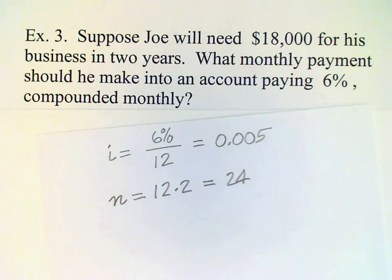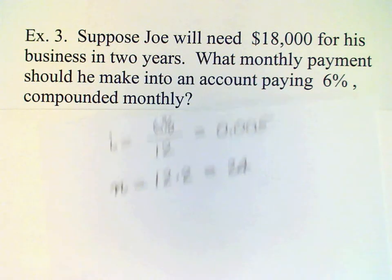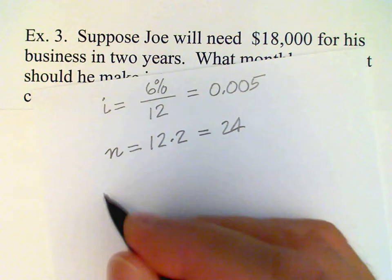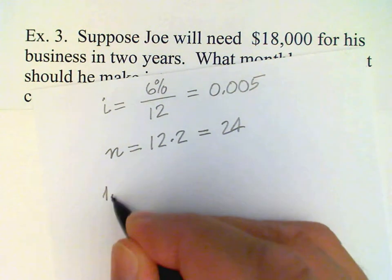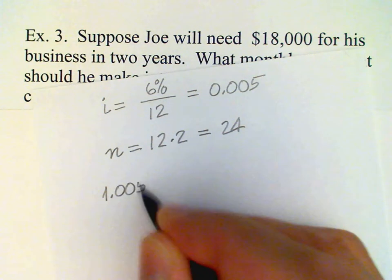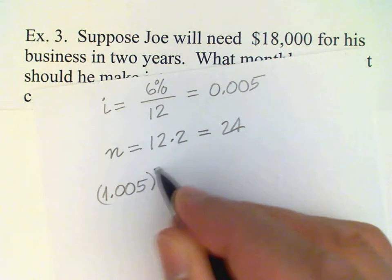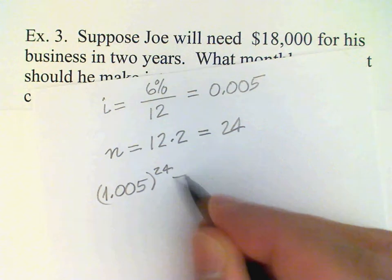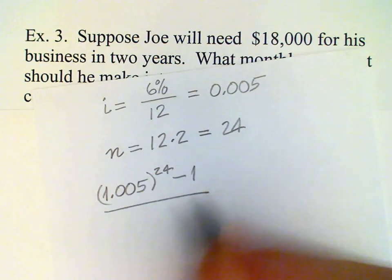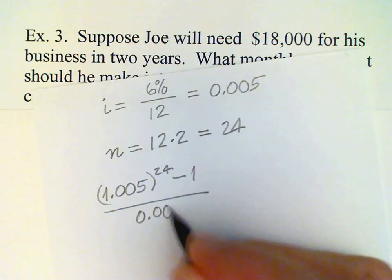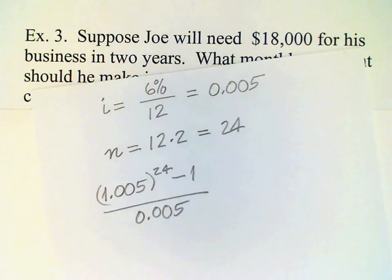So now we can calculate the annuity factor: 1.005 raised to the 24th power and subtract 1 and divide by 0.005. So let's do that here on the calculator.